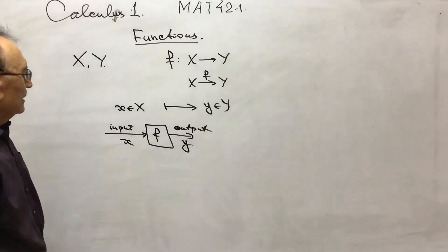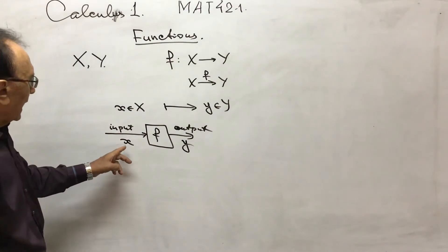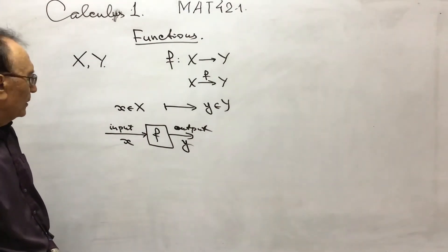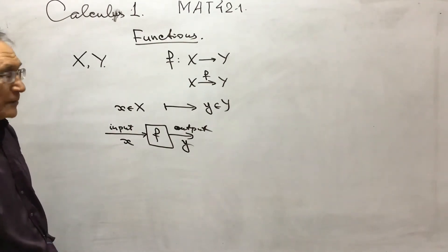So in this notation, x is called an independent variable. Y is called a dependent variable.